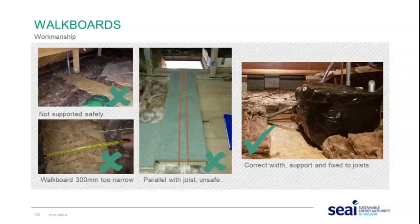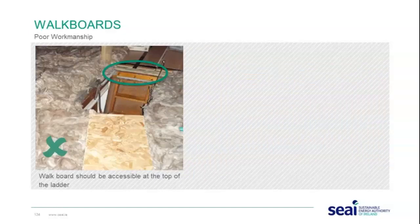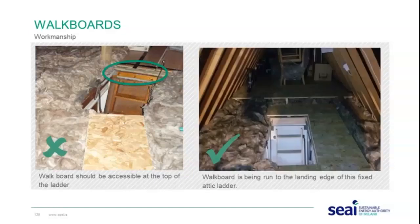Further poor workmanship examples show walk boards not accessible from the top of a fixed ladder — the walk board should run to the landing edge of the ladder. For homeowners who may be elderly and not experienced, attics can be dangerous with risk of falls. The walk board should be at the top of the ladder and easily accessible to the storage area and any light switches. Conversely, there are also examples where there is no walk board running to the ventilation unit in the attic.